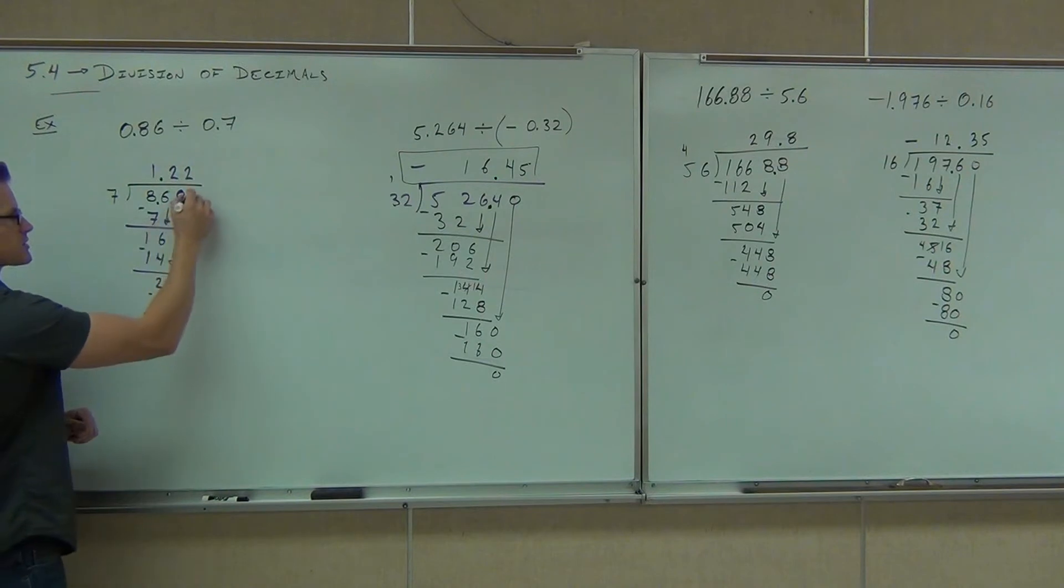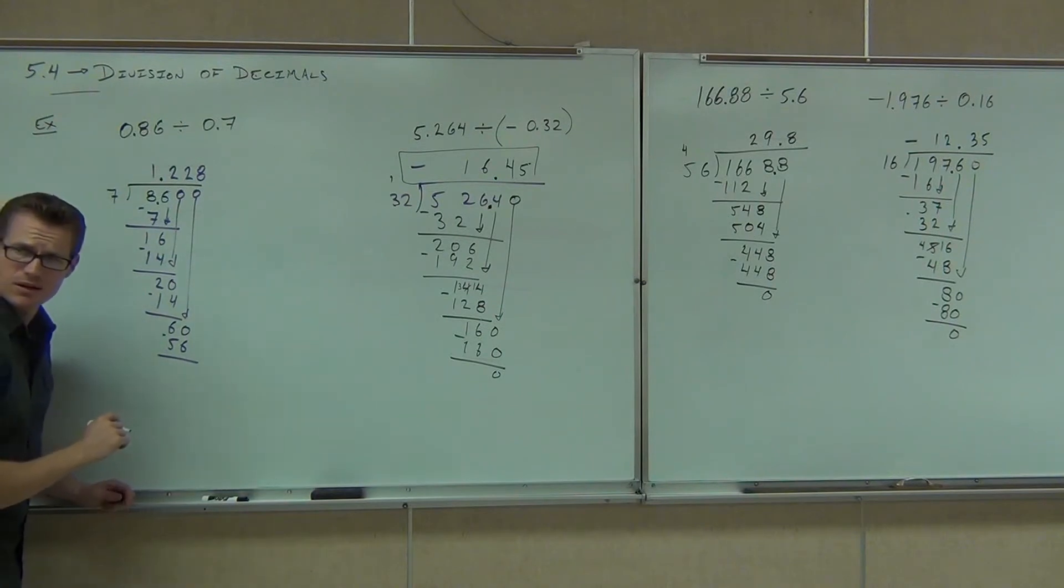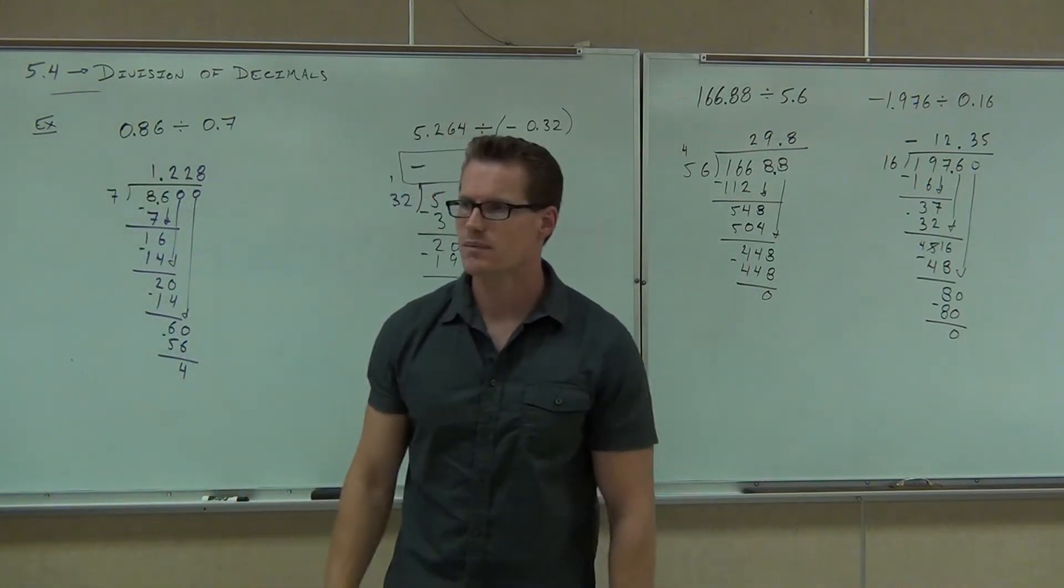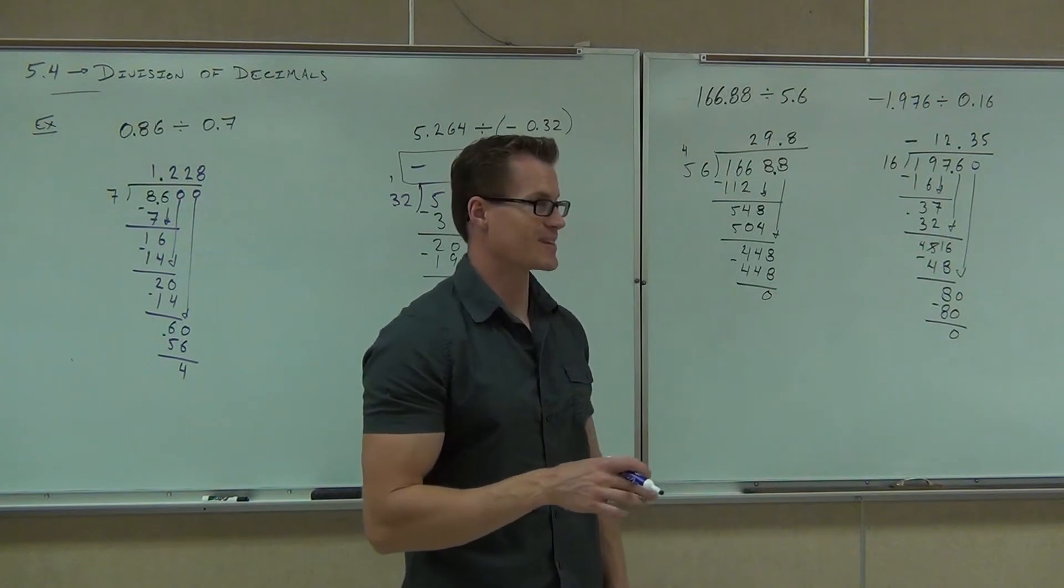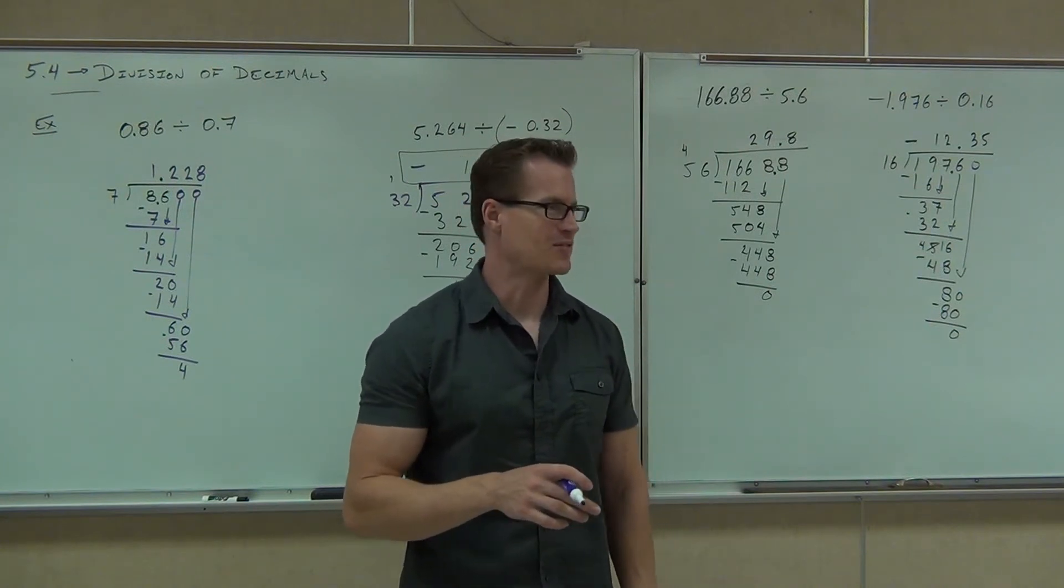I add a 0 on, I bring it down, I get 20. How many times does 7 go into 20? 2. That's 14. I subtract, I get 6. I subtract, how much am I going to get there? 4. That's a lot of work. Some of these decimals, they don't end right away, do they? It's going to go on for a long time. In fact, I don't even know if this one ever ends.